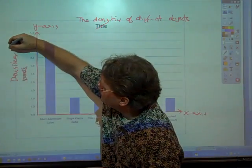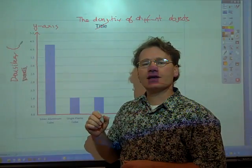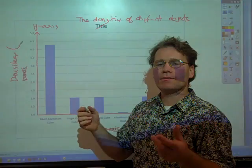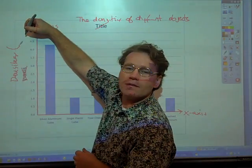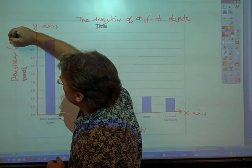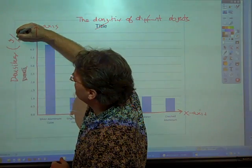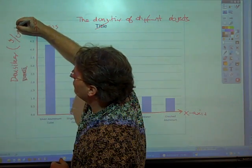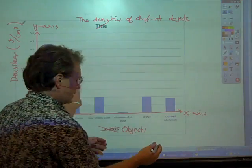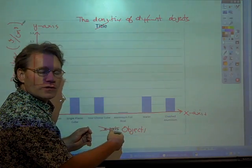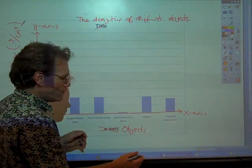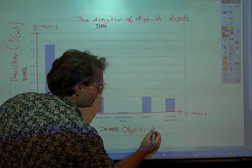And on the y-axis we'll put densities. You have to tell what these things are measured in, so we need to put our units. The unit that we'll use for density is grams per cubic centimeter, so grams per centimeter cubed. There isn't a good unit for objects so we'll just say that they're items.